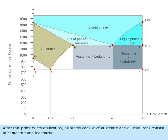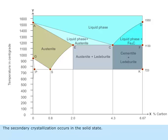After this primary crystallization, all steels consist of austenite and all cast irons consist of cementite and ledeburite. The secondary crystallization occurs in the solid state.